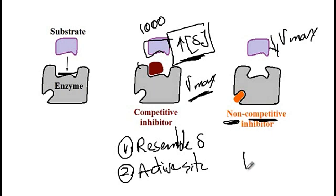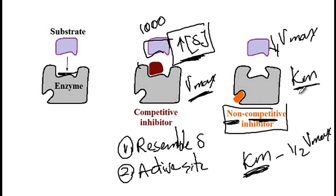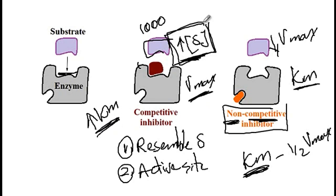One other factor you should know is Km, which is the concentration of substrate that allows the enzyme to reach half the Vmax. With the non-competitive inhibitor, Km remains constant. While with the competitive inhibitor, Km increases — meaning you will need a higher concentration of substrate to reach half of the Vmax.